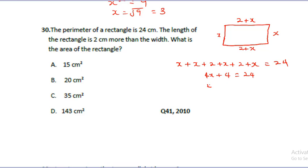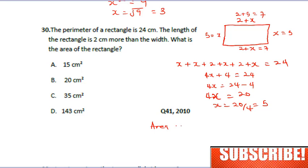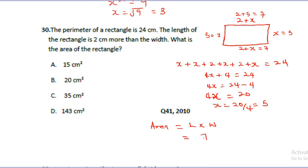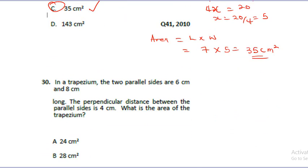Simplifying: 4x plus 4 equals 24, so 4x equals 20, and x equals 5. Therefore the width is 5 cm and the length is 2 plus 5, which is 7 cm. The area of the rectangle is length times width: 7 times 5 equals 35 cm squared. The correct answer is option C.